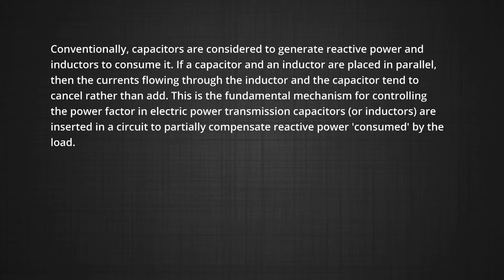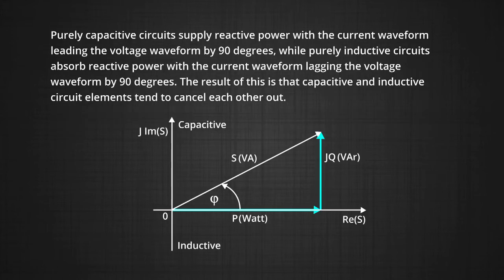We can say that capacitors or inductors are inserted in a circuit to partially compensate reactive power consumed by the load. Purely capacitive circuits supply reactive power with the current waveform leading the voltage waveform by the phase of 90 degrees. Whereas, purely inductive circuit absorbs reactive power with the current waveform lagging the voltage waveform by 90 degrees, that is the result of this is the capacitive and inductive circuit elements tend to cancel each other.